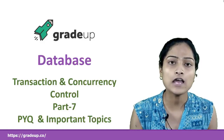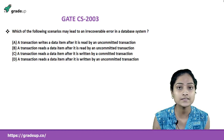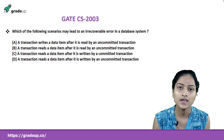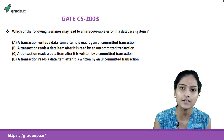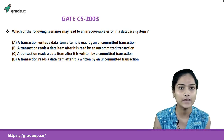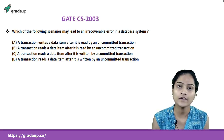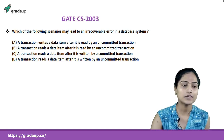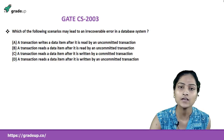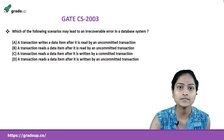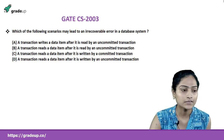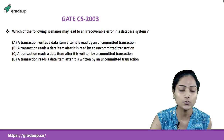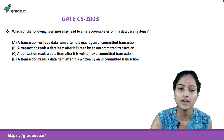Guys, till now I have discussed almost each and every concept required in Transaction and Concurrency Control, so I think you are very comfortable with solving previous year questions. I am going to solve them with you, so be cooperative and try to solve along with me for better understanding. This question was asked in GATE CSE 2003 for one mark. It asks: which of the following scenarios may lead to an irrecoverable error in a database system?